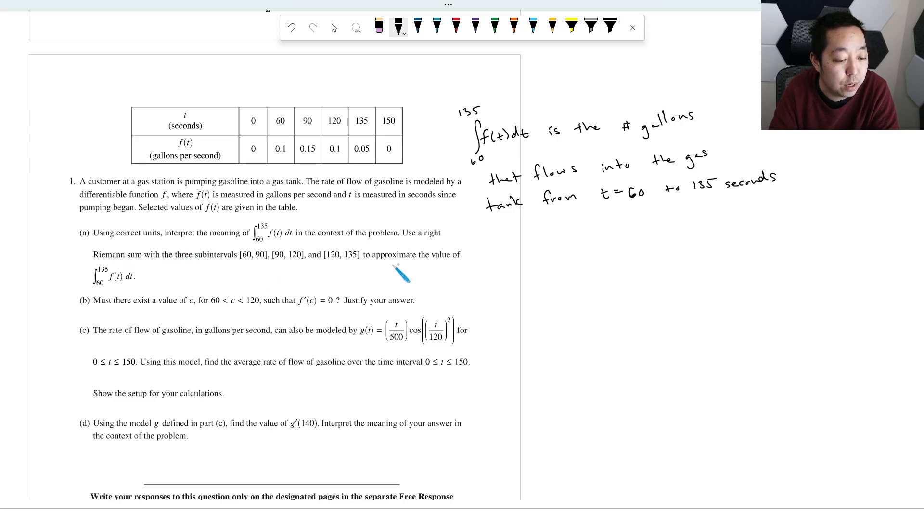Use a right Riemann sum with three sub-intervals to approximate the value. So they're telling you the interval widths are from 60 to 90, that interval width is 30, then from 90 to 120, that interval width is 30, and then from 120 to 135, that interval width is 15. And to do your Riemann sum, you would approximate it by that width times the right interval, the 0.15.